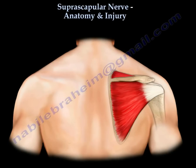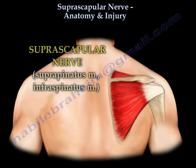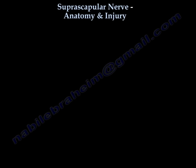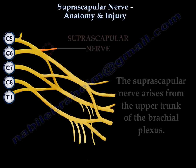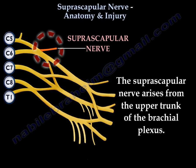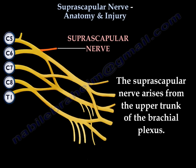The suprascapular nerve supplies the supraspinatus and infraspinatus muscles. It arises from the upper trunk of the brachial plexus.